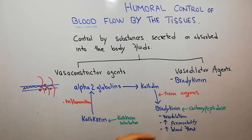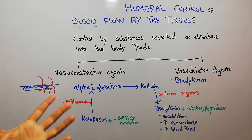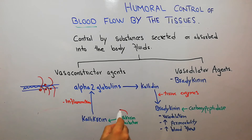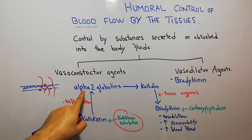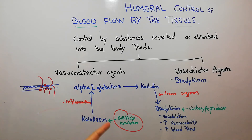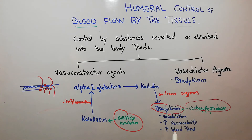Injection of even a small amount of bradykinin can increase blood flow six to seven times. Once kallikrein has been activated and has acted on alpha-2 globulin, it is destroyed by a kallikrein inhibitor. The life of bradykinin in the blood is also very short — only a few minutes — after which it is destroyed by carboxypeptidase. Once bradykinin has caused vasodilation, increased capillary permeability, and increased blood flow, it is deactivated by these enzymes.